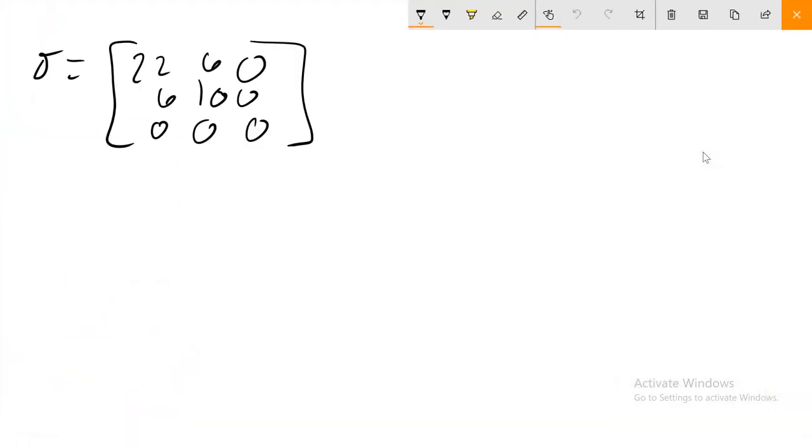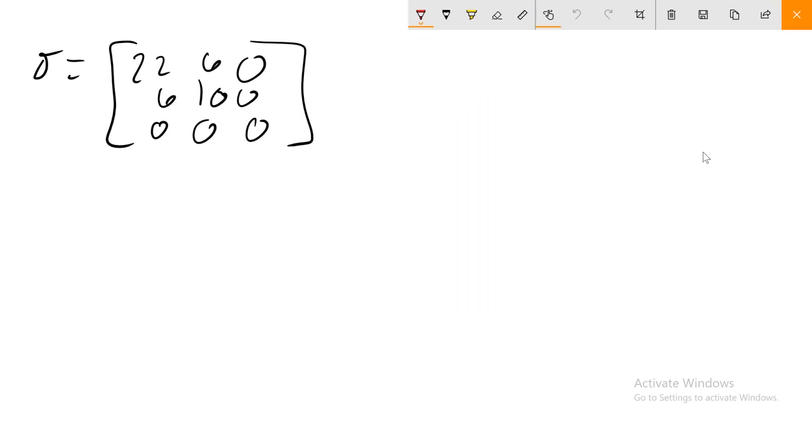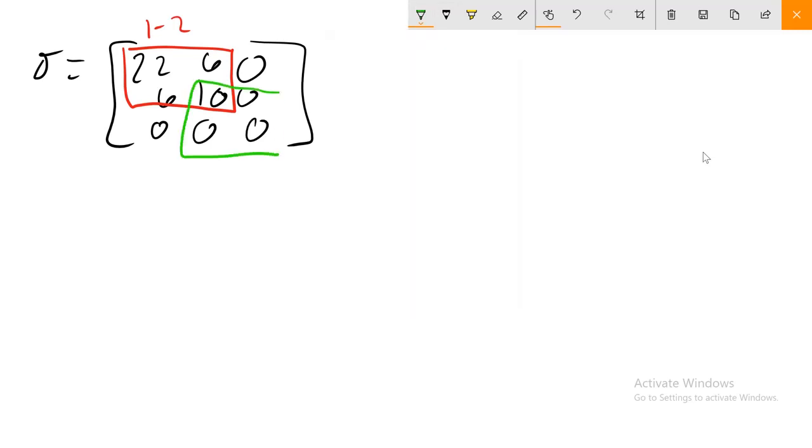So let's go ahead and look at how we want to approach this problem. We've already dealt with this tensor and we want to look at basically, I'm going to look at this as my 1, 2 plane. My green is going to be my 2, 3 plane. And then my blue is going to be my 1, 3 plane.